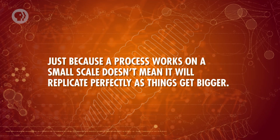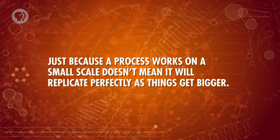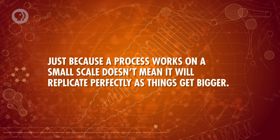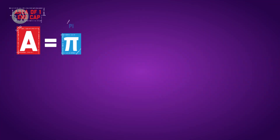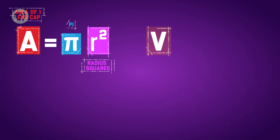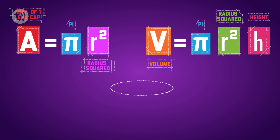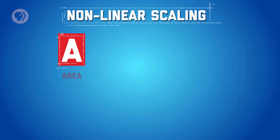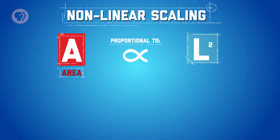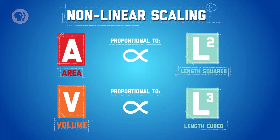You're still not ready to build a full desalination plant, but you're getting closer. Just because the process works on a small scale doesn't mean it will replicate perfectly as things get bigger. Consider the efficiency of your RO unit — it might turn out that the surface area to volume ratio of the membrane determines the system's efficiency. Unfortunately, that quantity will change as you enlarge the membrane. Engineers call this situation non-linear scaling, and it's a big challenge when designing an industrial process.